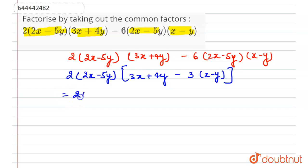Now, after solving we will get 2(2x - 5y)[3x + 4y - 3x and this minus minus will be plus, plus 3y].